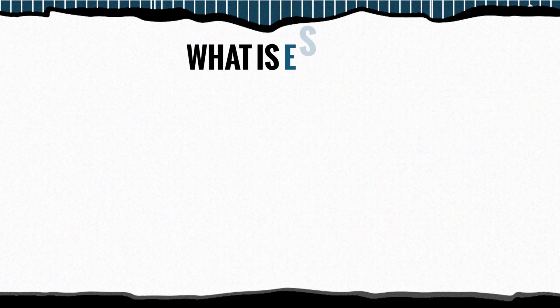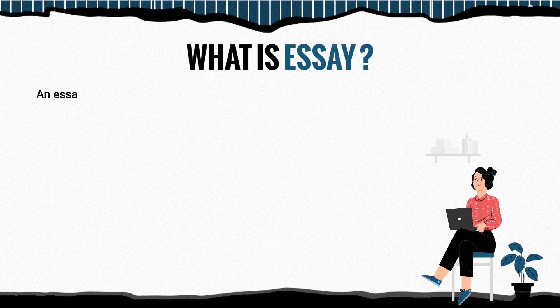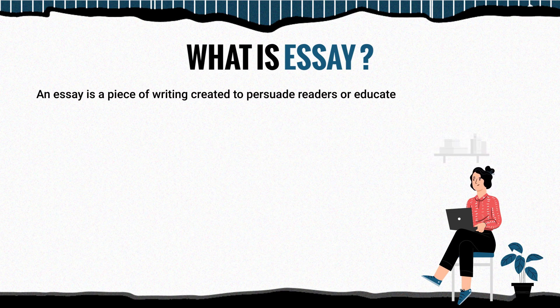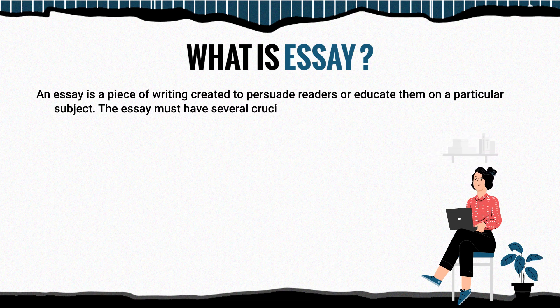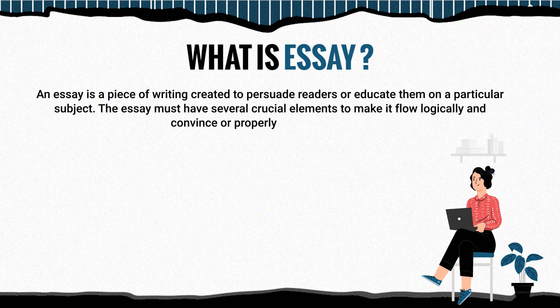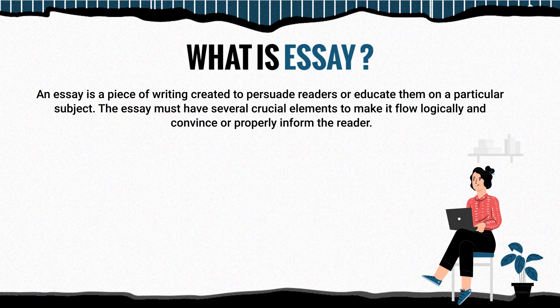An essay is a piece of writing created to persuade readers or educate them on a particular subject. The essay must have several crucial elements to make it flow logically and convince or properly inform the reader. To write an essay, it is necessary to know its five main types.